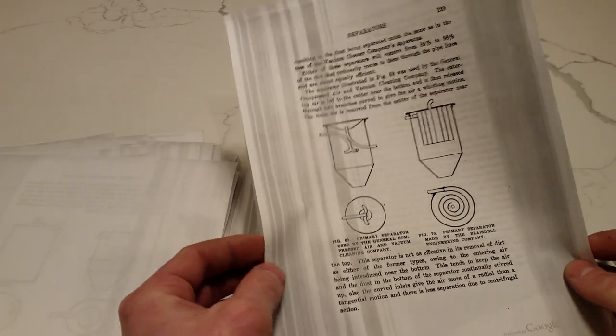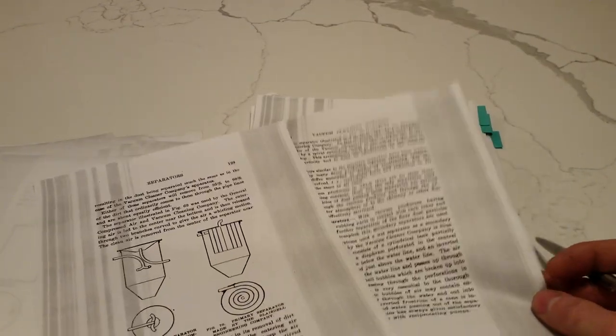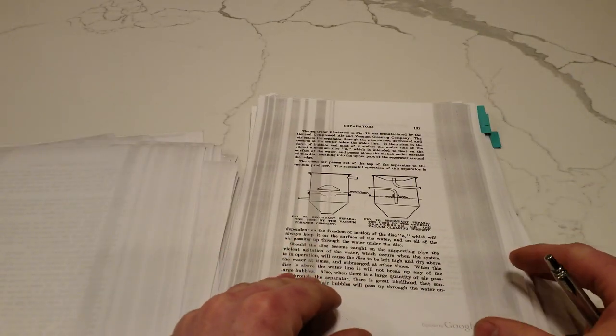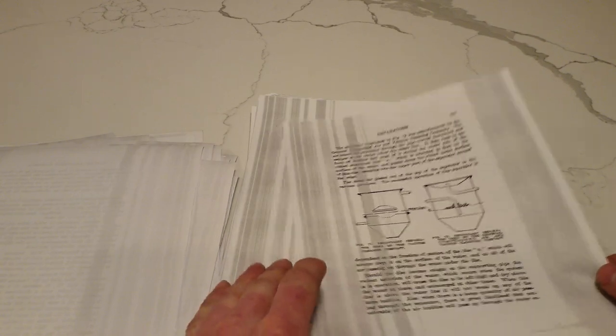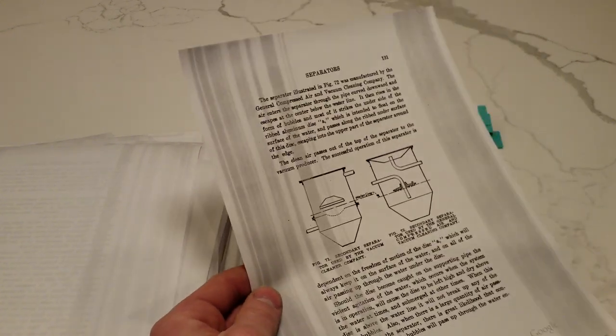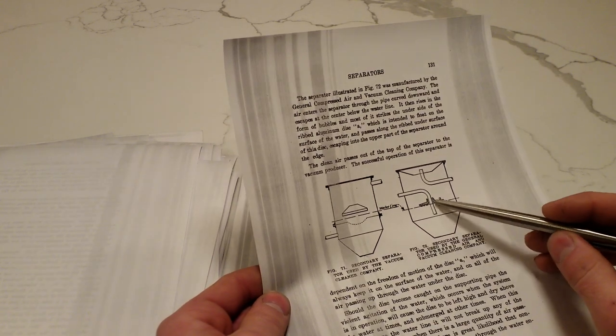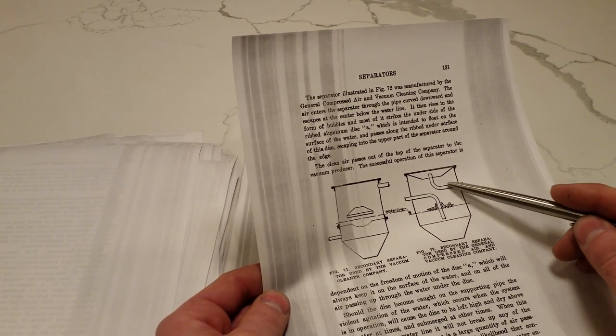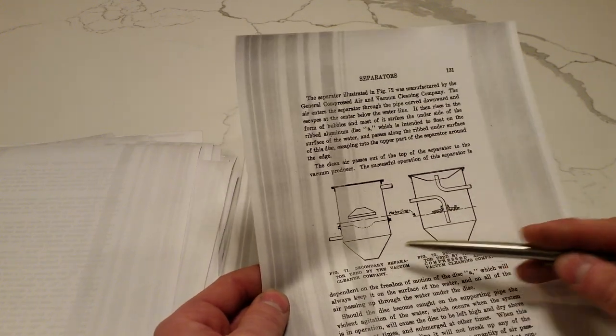Look at that thing. And, then your secondary separators, because if you were using a reciprocating pump, you couldn't have any dust coming through. So, you had to catch it in water. This would force the air in underneath the water line. And, then this would be your clean air going out to the pump. So, this operated kind of like a Thermax.